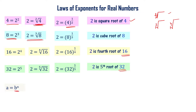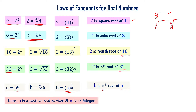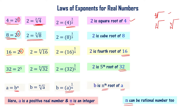In general, if a equals b power n, then b equals the nth root of a, which can also be written as b equals a power 1 by n. Here a and b are positive real numbers. In the particular examples shown, n was an integer, but n can even be a rational number.